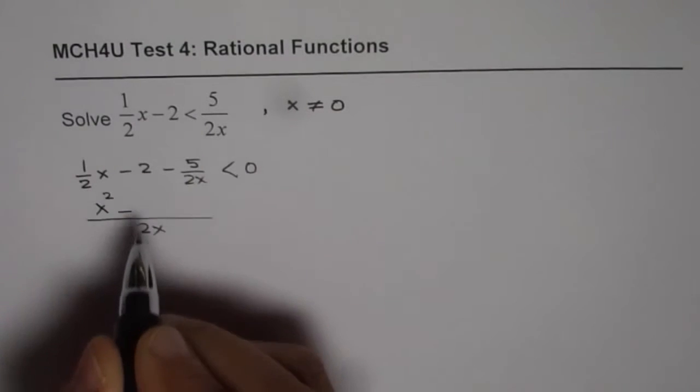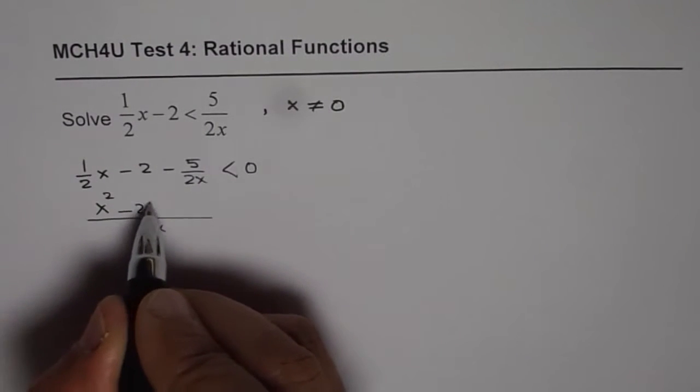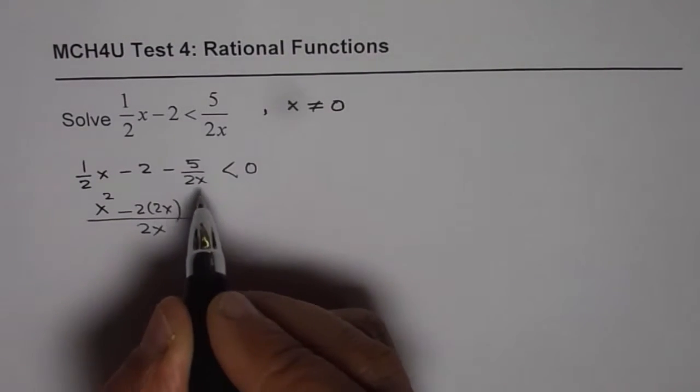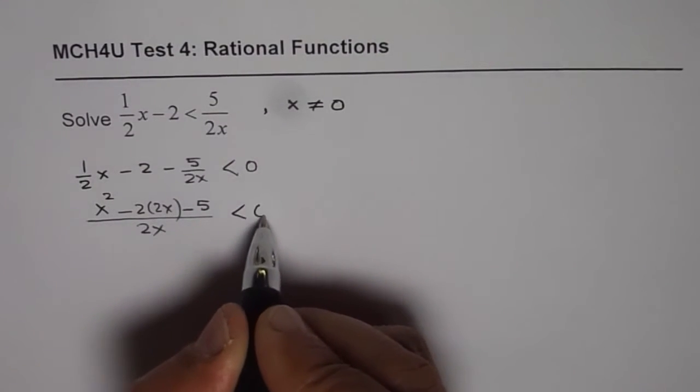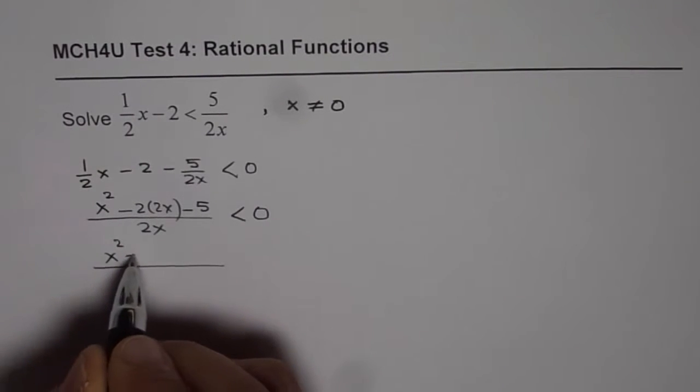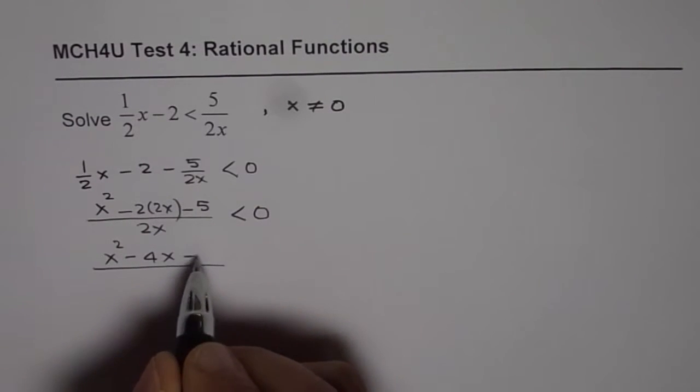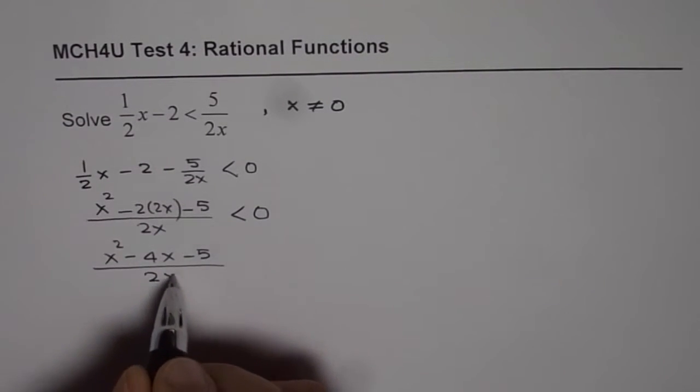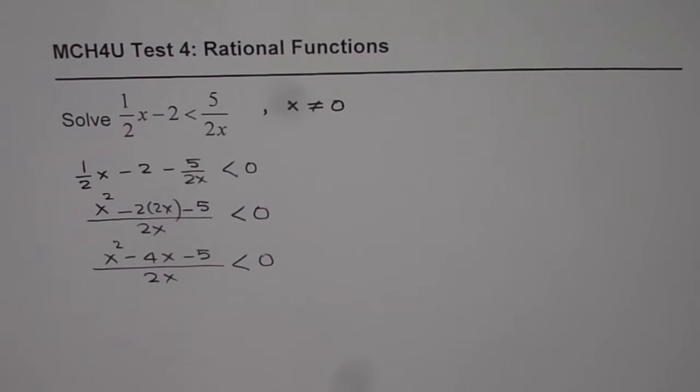In this case, we have to multiply by 2x. So, it is 2 times 2x. And here, it will be minus 5 less than 0. So, in the numerator, what we get is x squared minus 4x minus 5 and the denominator is 2x less than 0.